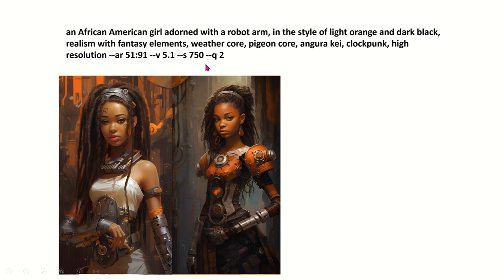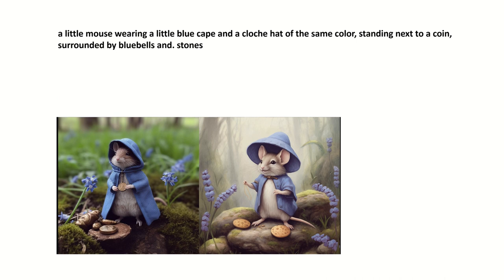Then we have the little mouse wearing a little blue cape. You can change it to a red cape, black cape — you can change the cloche to a hat, a different color. It could be standing next to anything you want. Here we see it standing next to a coin surrounded by bluebells and stones. The digital AI doesn't care about an extra period in the prompt because it still picked up an awesome image.